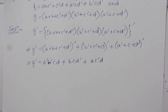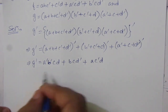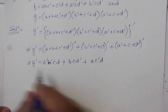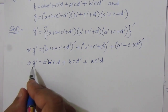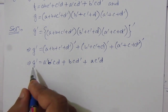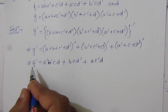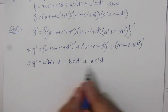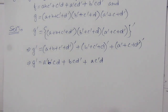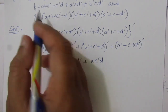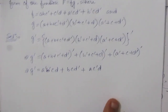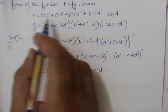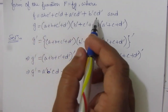We have already seen that whenever we find a sum of product expression for g-bar — the complement of the given function — we can put zero values for these expressions in the K-map. So let us first find out the four-variable K-map for the given function f.